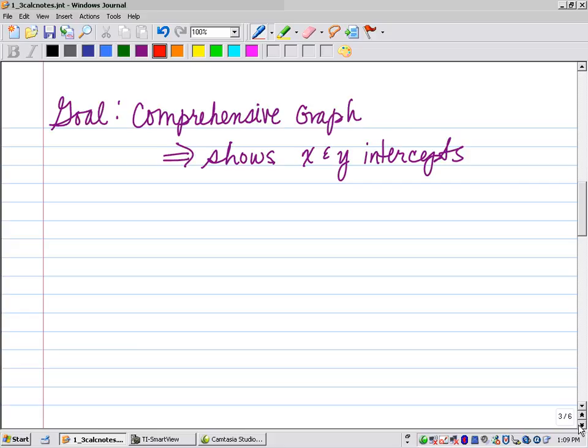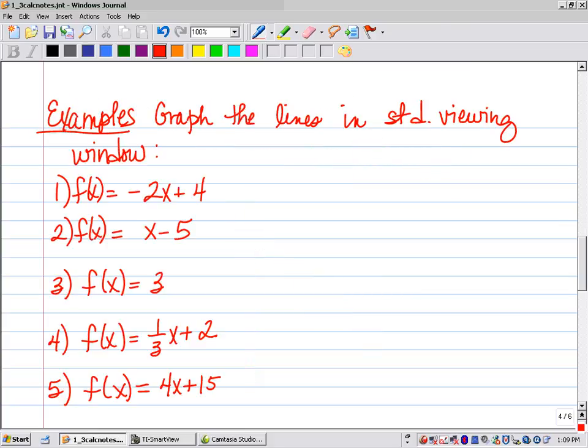Now, our goal is to get a comprehensive graph where we want to show the x and the y intercepts. So on the graphing calculator, in your window, you want to see where it's crossing the x axis and the y axis. Now, if your x and y intercepts are between negative 10 and 10 in that standard window, you don't have to do anything to adjust your window. But oftentimes, they're not going to be within those values, so we'll have to do something to change the window. So let's graph these lines that I have in the standard viewing window and just see if we can see a complete graph.